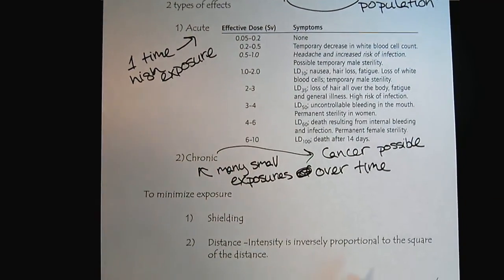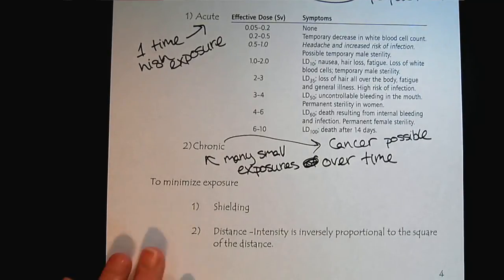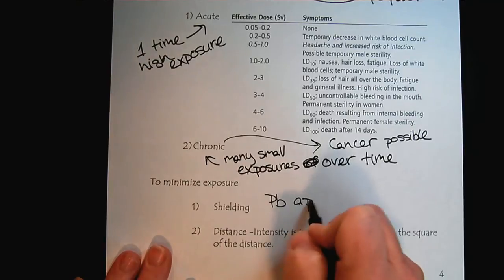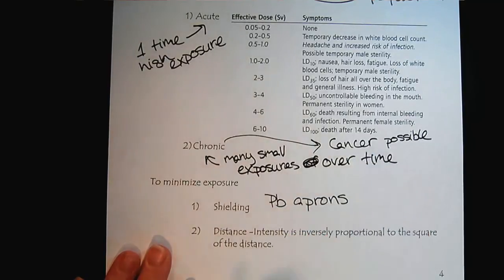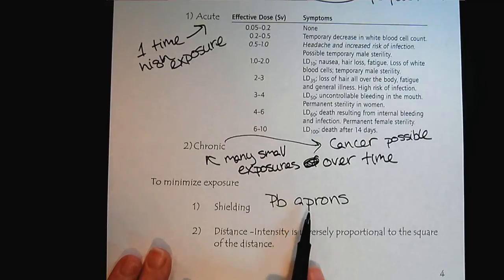So what do we do to minimize our exposure? Shielding. Notice lead aprons. When we go to get a dental x-ray or things, lead is a great stopper. It can stop x-rays. We would need 10 centimeters to stop gamma, but shielding is an important way.